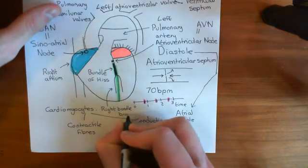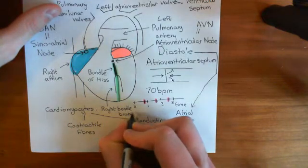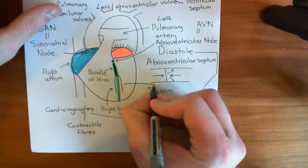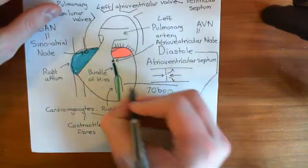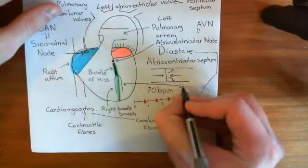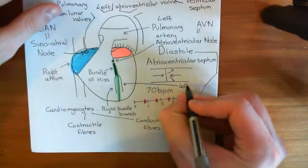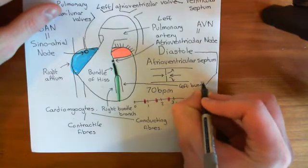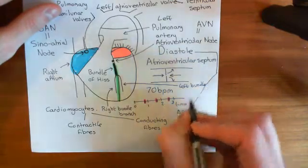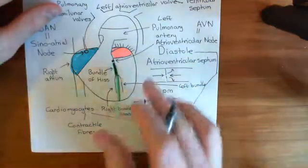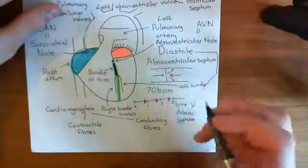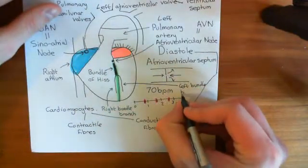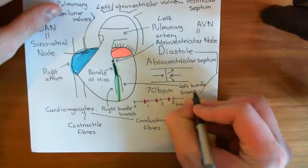The bundle of His splits into the left bundle branch and the right bundle branch. These are still both within the ventricular septum — they have not yet left it. The action potential is being conducted down these fibres without yet causing an action potential in the contractile ventricular cardiomyocytes.